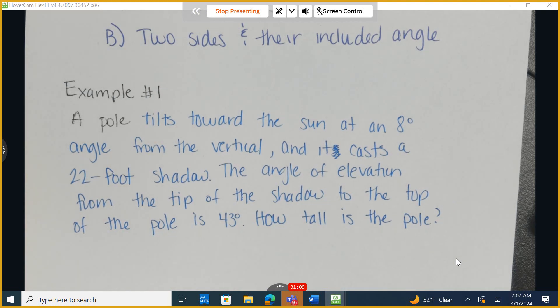A pole tilts towards the sun at an eight-degree angle from the vertical, and it casts a 22-foot shadow. The angle of elevation from the tip of the shadow to the top of the pole is 43 degrees. How tall is the pole? 30 more seconds to draw this picture. By a raise of hands, who feels like I'm reading the problem, but I don't know where to start and draw the picture?